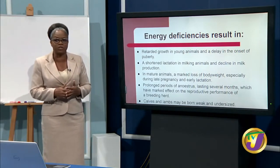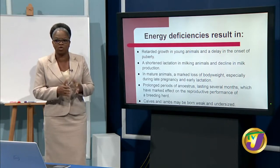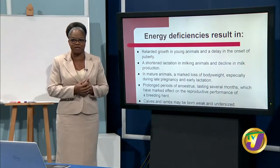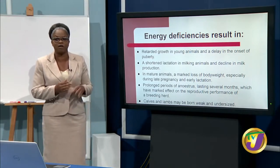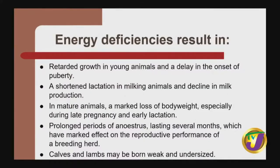These are symptoms seen when an animal suffers from malnutrition. Remember that 75% of their diet should be energy. If energy is not there, it will retard growth in young animals, shorten lactation in milking animals, and cause a decline in milk production. In mature animals, there will be a marked loss of body weight, especially during late pregnancy and early lactation, prolonged periods of anestrus lasting several months with marked effect on reproductive performance, and calves and lambs may be born weak and undersized.